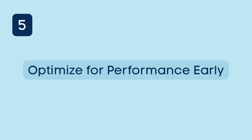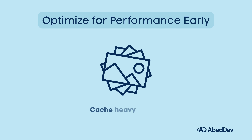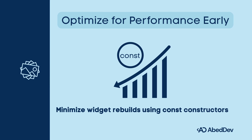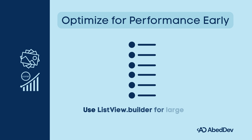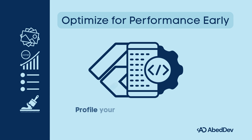Optimize for performance early. Bad performance scales user experience negatively. Best practices: cache heavy assets like images, JSON, and API responses. Minimize widget rebuilds using const constructors where possible. Use ListView.builder for large lists instead of rendering all items. Use RepaintBoundary to isolate expensive widgets. Profile your app using Flutter DevTools regularly.